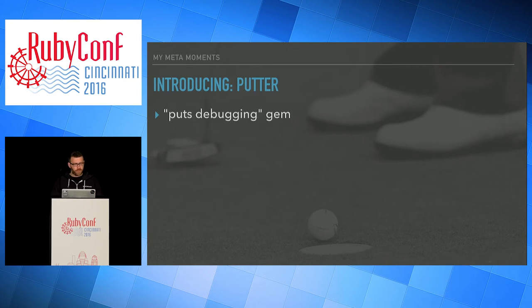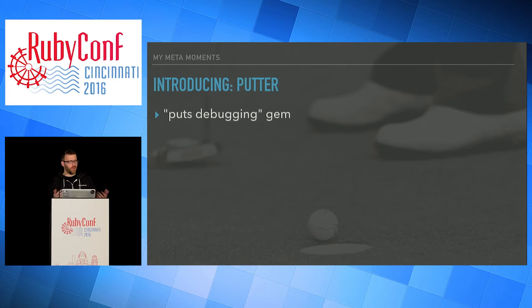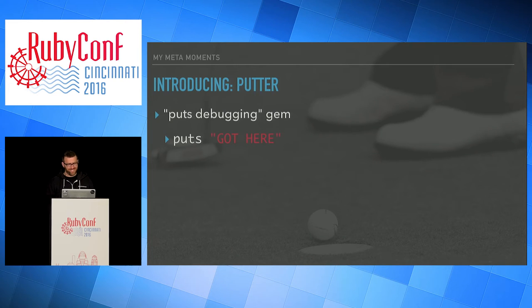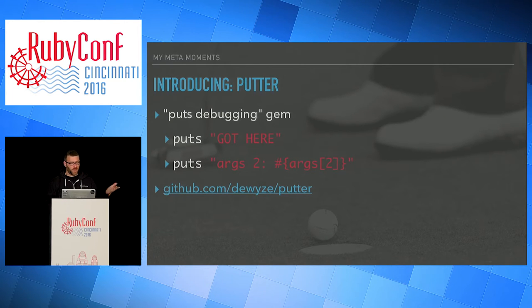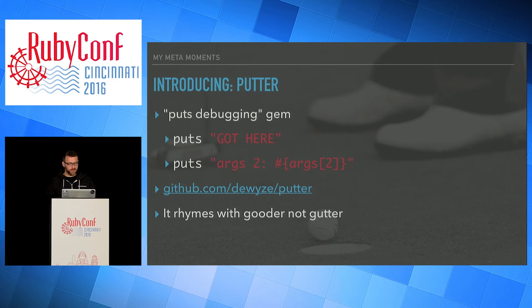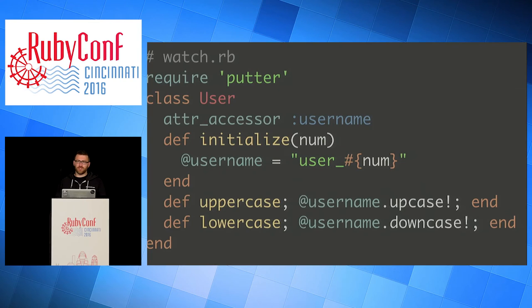Putter is a puts-debugging gem. If you don't know what puts-debugging is, it's the really fancy advanced method where you just put puts statements everywhere to figure out where you are in your code and what's going on. You can find it at github.com/dewis/putter. Despite the fact that I have a putter in the background, it rhymes with 'gooder,' not 'gutter.'